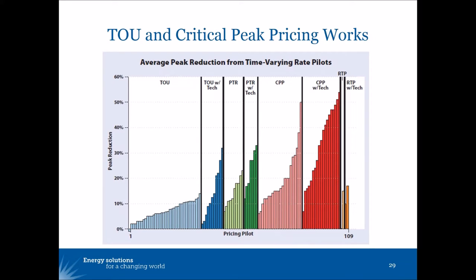The highest results are being achieved through the critical peak pricing offerings and the lowest results through simple time of use rate design. But all of them achieved peak reduction. We also wanted to contrast those results with the typical peak reduction expected from a demand charge applied to a residential customer without a time of use rate — those results tend to be in the 5% or lower range.